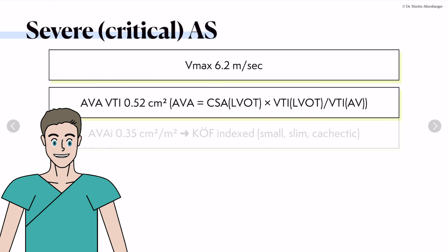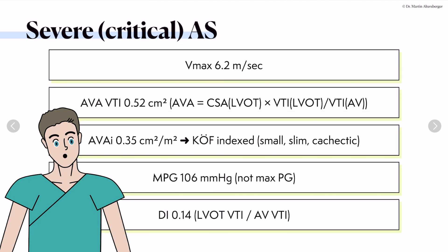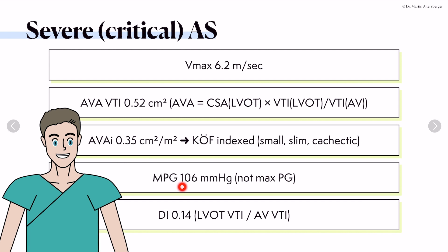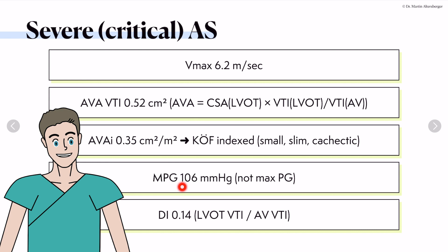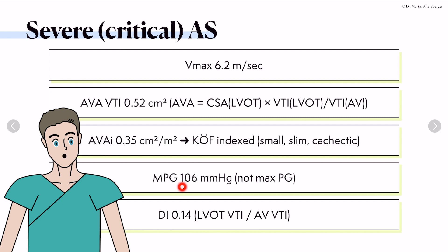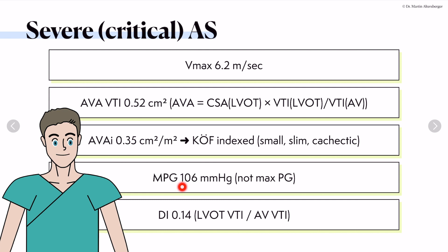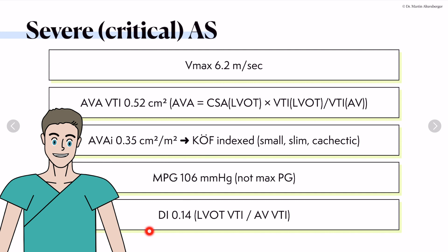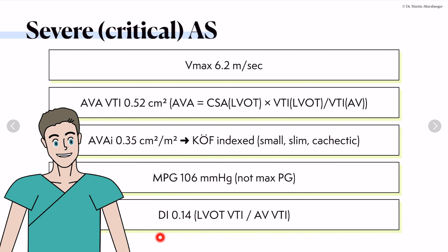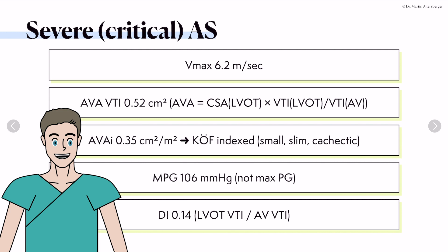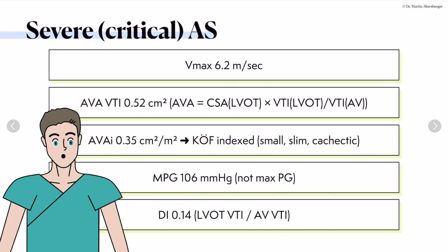So in this case, a severe or even critical aortic stenosis with a maximum velocity of 6.2 meters per second. The aortic valve area is 0.52 square centimeters, indexed at 0.35 square centimeters per square meter — body surface area indexed in a small and slim patient. The mean pressure gradient was 106 millimeters of mercury. The dimensionless index was also truly severely reduced at 0.14, where true severe stenosis starts at 0.25.